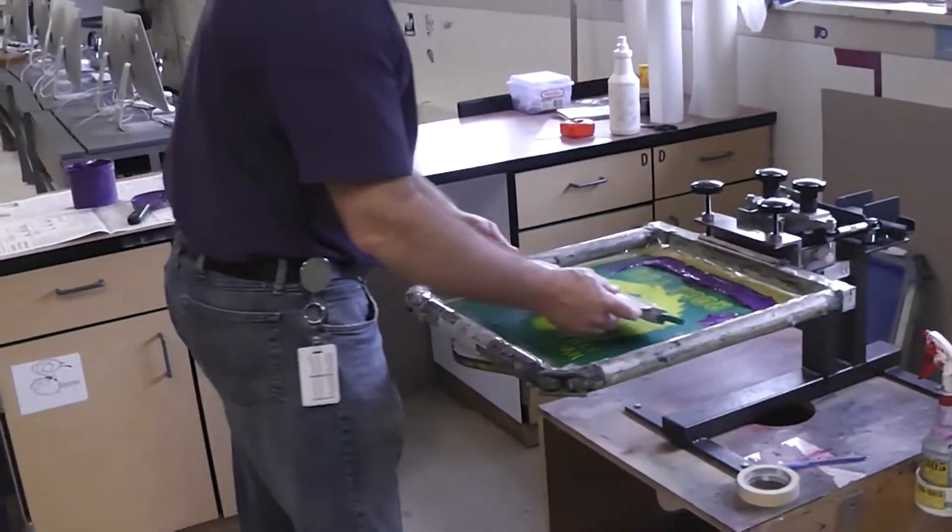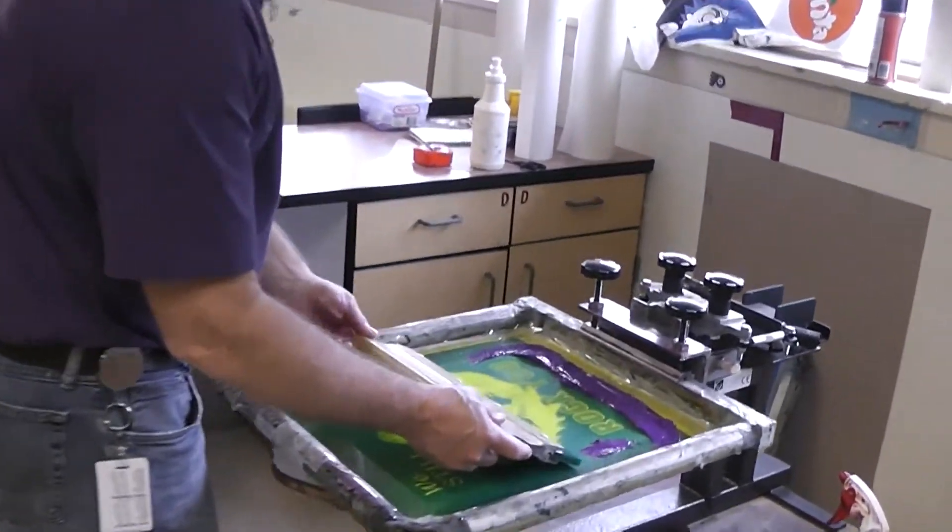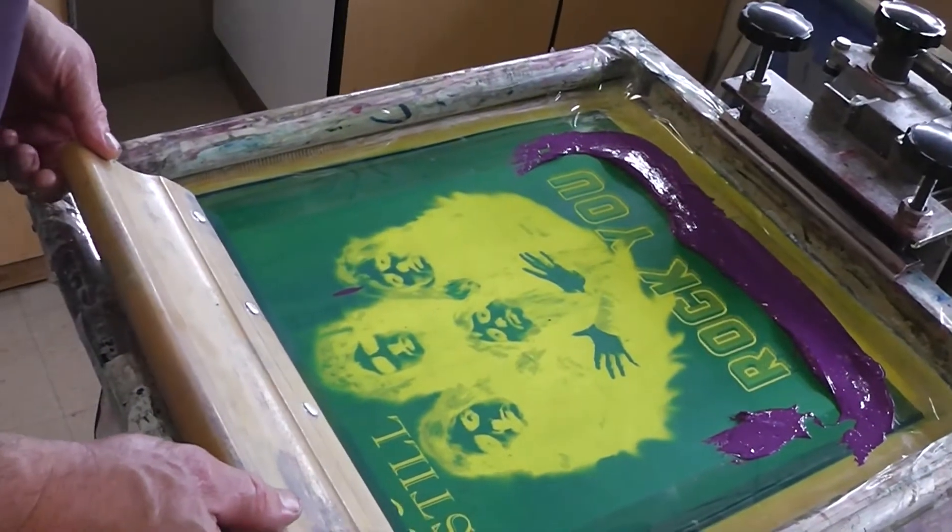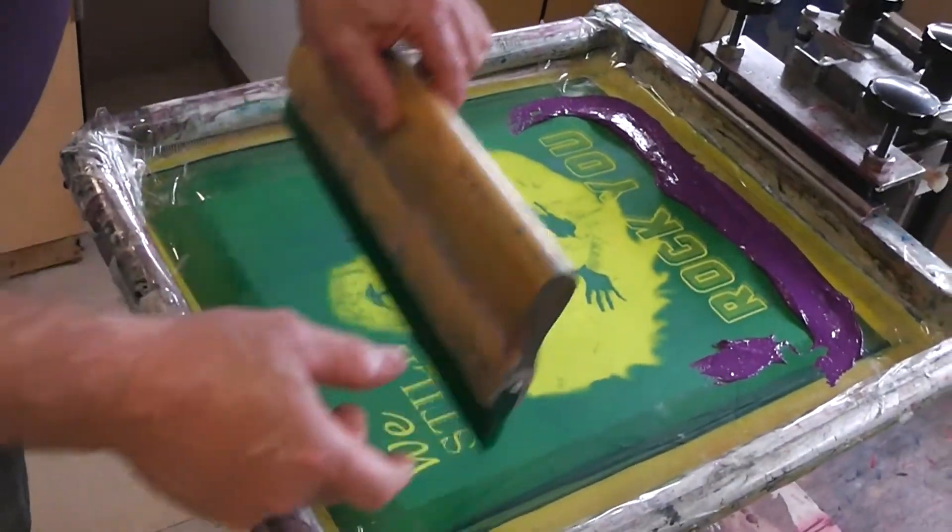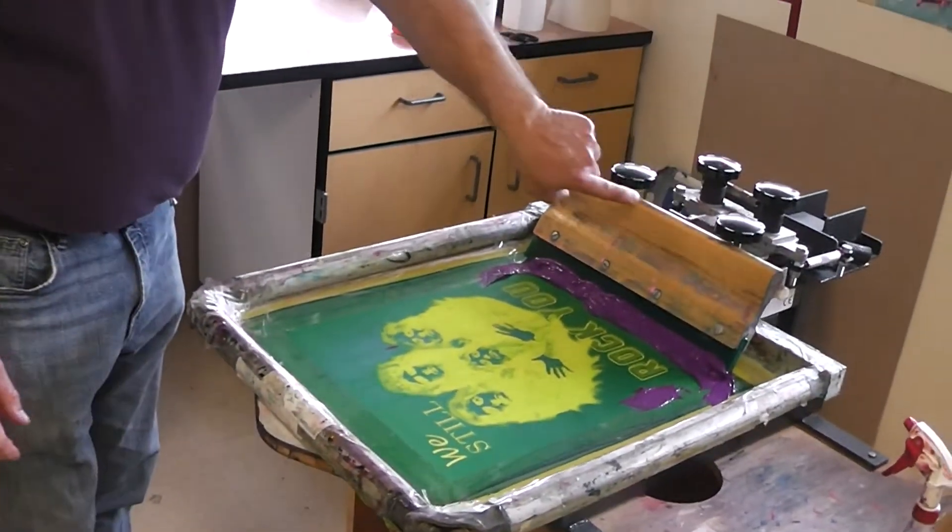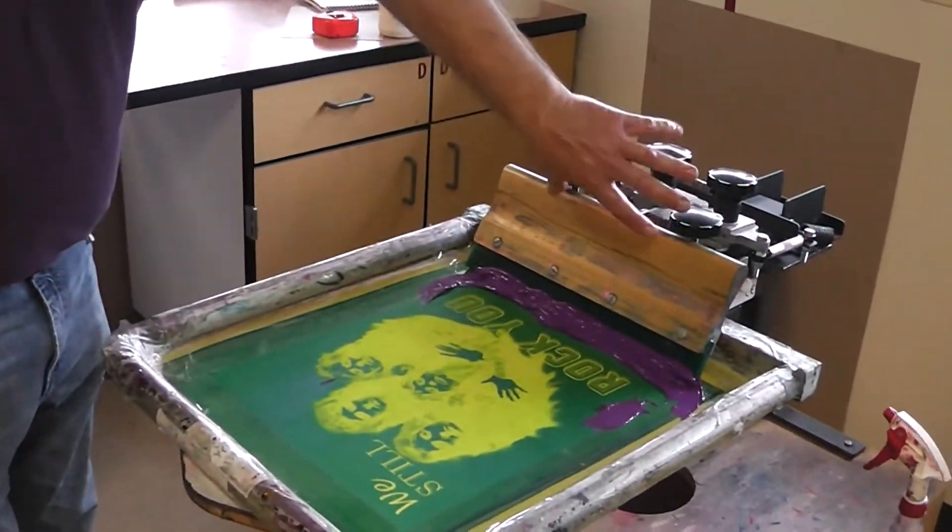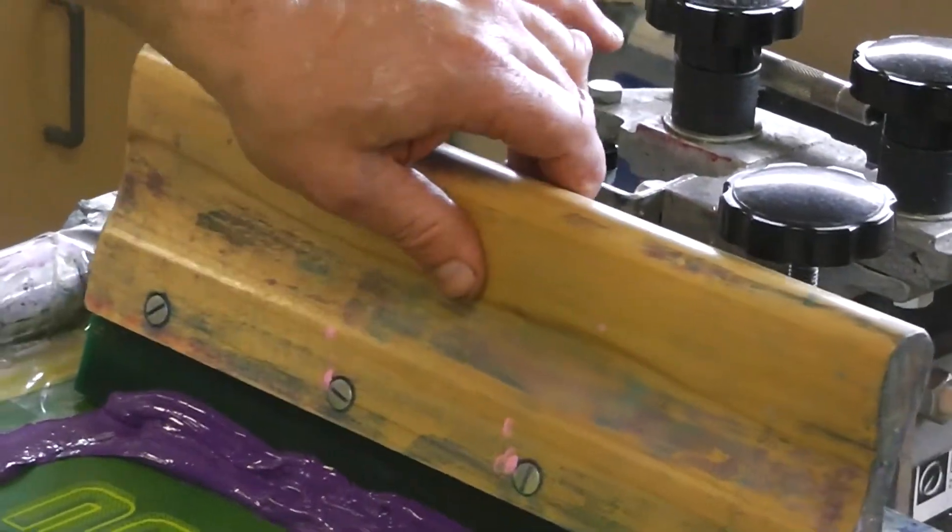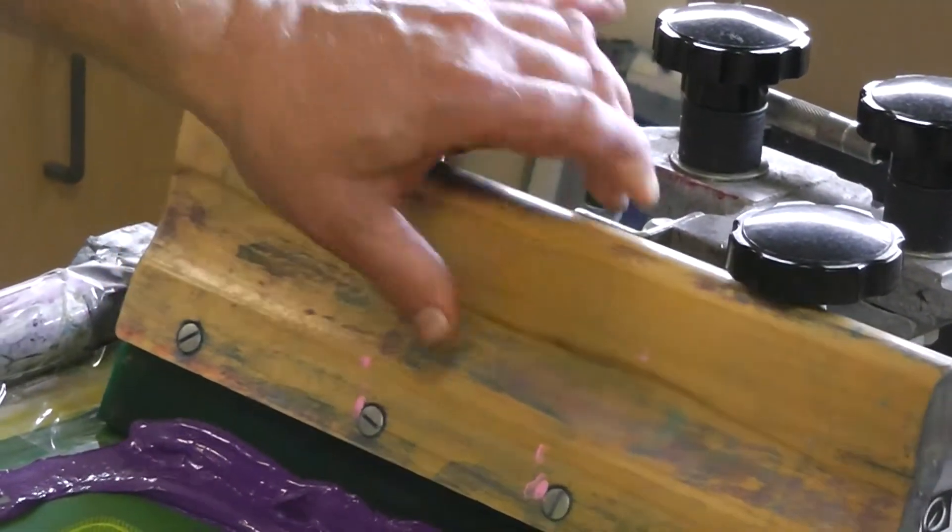So the key here is, is my squeegee wide enough to cover my stencil? And you can see I've got at least an inch on the left and right. So that's a good size squeegee to use for this design. Tuck it under the black knobs of the screen press so that it will not fall forward. A lot of kids just put it like this straight up.